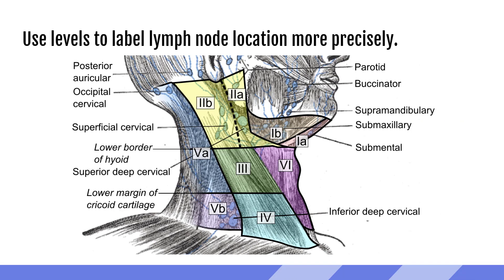To be more precise about where a lymph node is located, we should use the levels of the cervical neck. This allows whoever is reading our ultrasound and maybe comparing it to a CT to correlate better between the two modalities. It also helps anyone following up — whether doing a biopsy or checking if things have improved — to know exactly where to look. I'll often take a picture of the cervical levels map into the ultrasound room, especially if I'm doing lymph node mapping. For example, a large lymph node just underneath the ear would be labeled as transverse right level 2b, and I'd take transverse images and measurements, then switch to sagittal with the same right 2b level annotation.